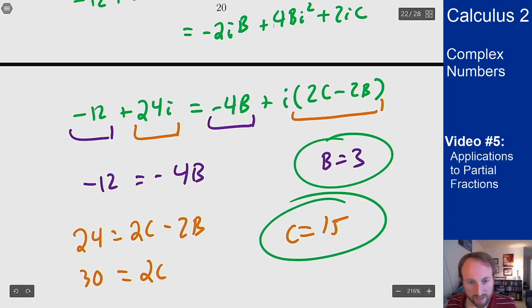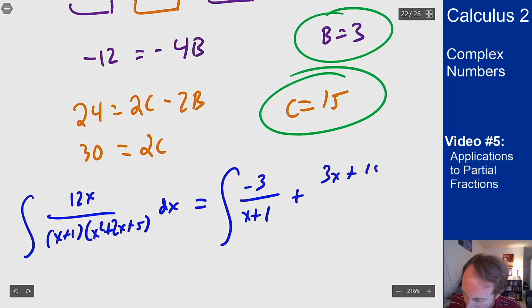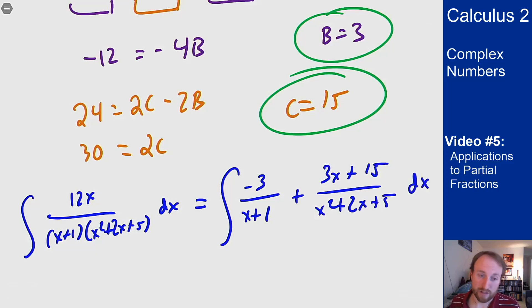I can write all my integral again. So I had A was -3 so -3/(x+1) and then I have plus (3x+15)/(x²+2x+5) and now we use our normal techniques to figure out what this integral is.